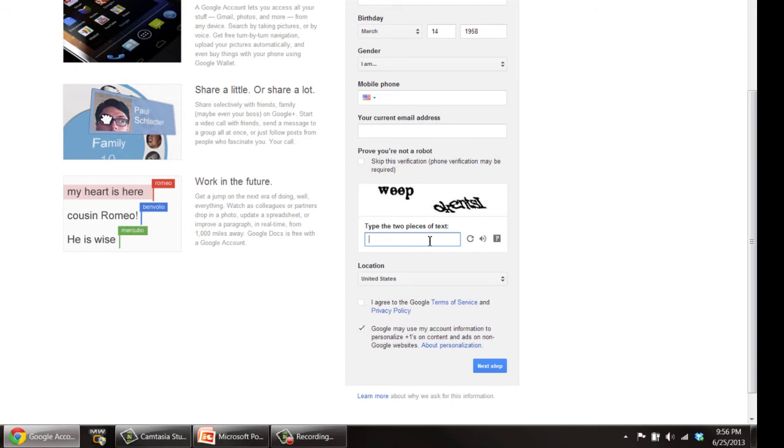Fill in the captcha right here, hit next step. It'll take you through to fill out the rest of the information, and you'll have a second Gmail address. All you have to do is do that twice, once for each Gmail address, and you'll have two Gmail addresses that you can use. My name is Matt Pierce, thanks for watching.